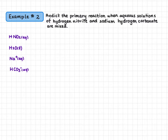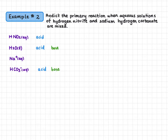Now we classify as acids or bases. For acids we're looking for a donatable hydrogen. We have three acids present: nitrous acid, water, and hydrogen carbonate. For bases, looking for a lone pair and/or negative charge, we have two bases: water and hydrogen carbonate. Both water and hydrogen carbonate are amphiprotic species, meaning they're capable of acting as both an acid and a base.